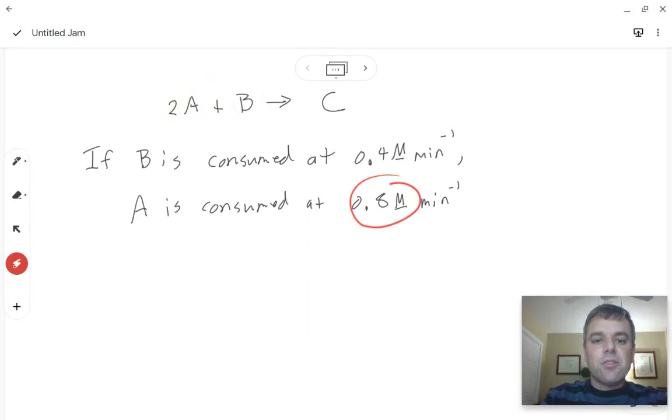So for every B, you use two A's. So A gets consumed at twice the rate as B. And then since B and C have the same coefficients, then C is produced at 0.4 molarity per minute.